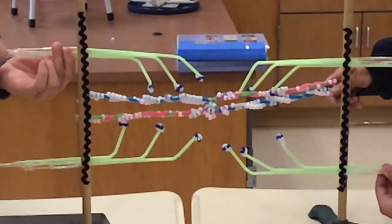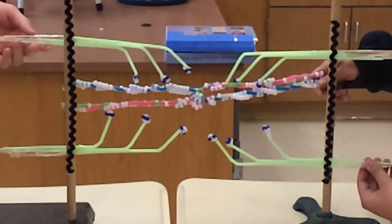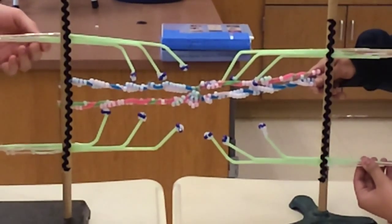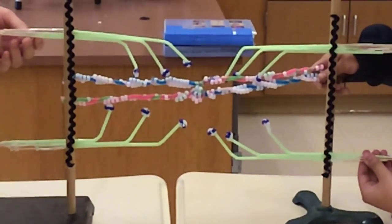To start this, the distal end of a motor neuron releases acetylcholine. This acetylcholine then diffuses across the gap at the neuromuscular junction.